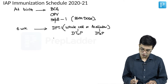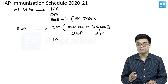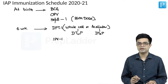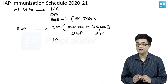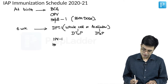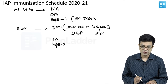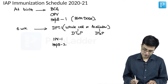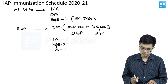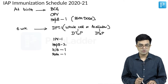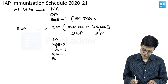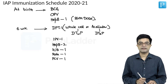You will give the first dose of IPV. Please remember it is not fractionated IPV — it is the proper IPV, which is 0.5 ml, not 0.1 ml. Then you will have hepatitis B second dose (Hep B2), Hib dose one (Haemophilus influenzae type B), rotavirus vaccine first dose, and PCV first dose.